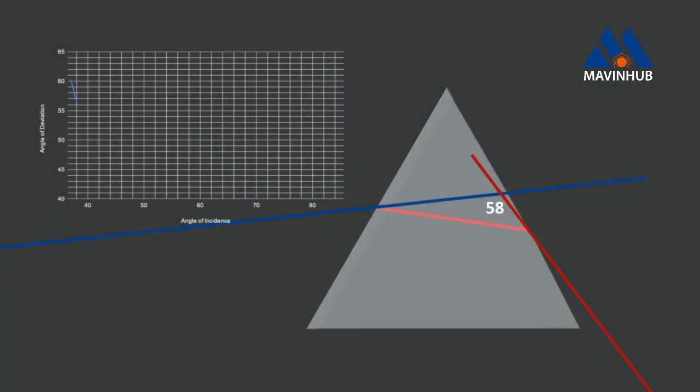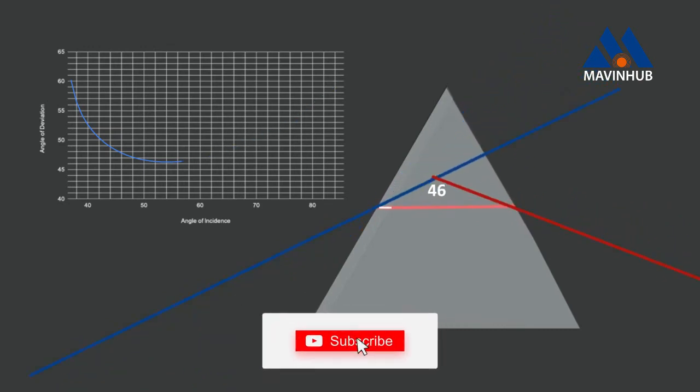In this illustration, the angle of deviation decreases as the incident angle increases until it attains the minimum angle of deviation. Then, it starts increasing. At minimum deviation, the refracted ray in the prism is parallel to its base.